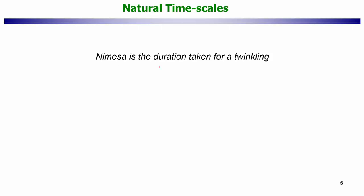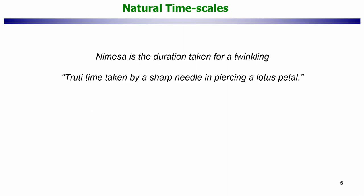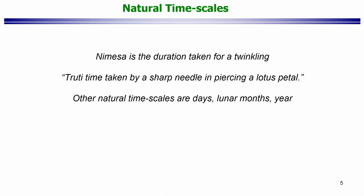Welcome back to another lecture on Introduction to Soft Matter. In the last class, we were looking at natural time scales and had a quick discussion on some of the indicative time scales that came from natural phenomena. For example, the nemesha is the duration taken for a twinkling, and Trutti is the time taken by a sharp needle in piercing a lotus petal. There were obviously other time scales like days, lunar months, and years.